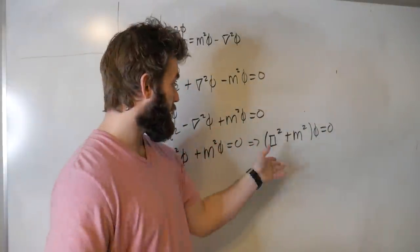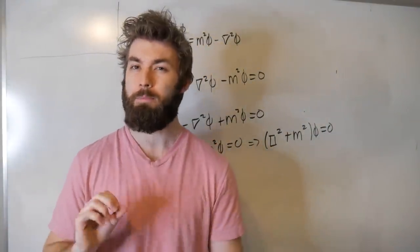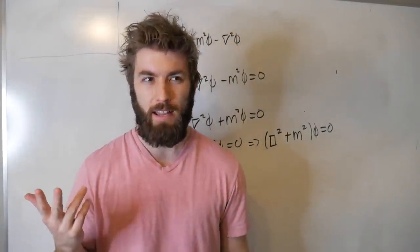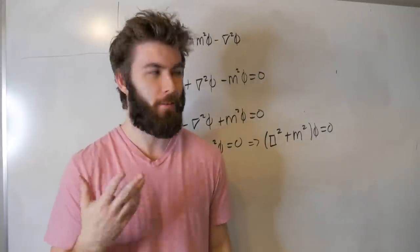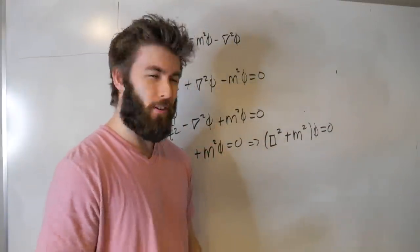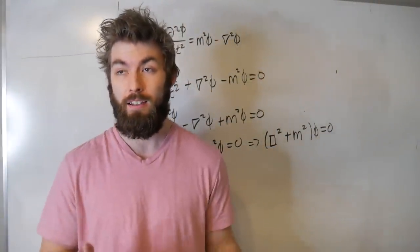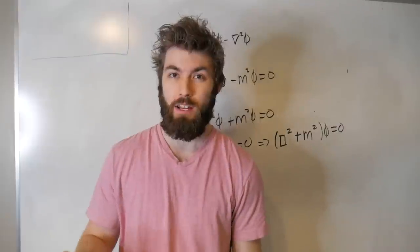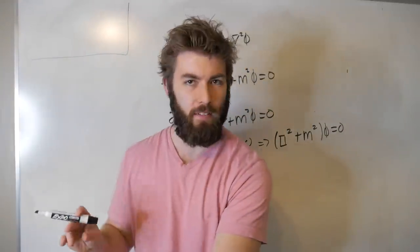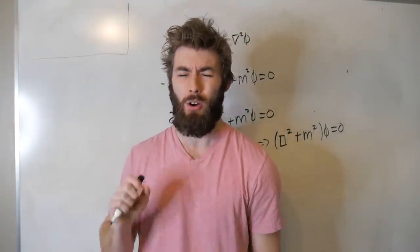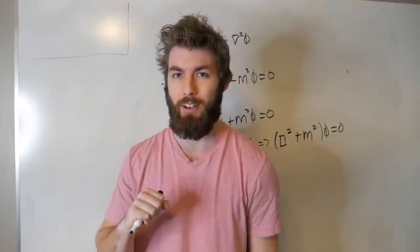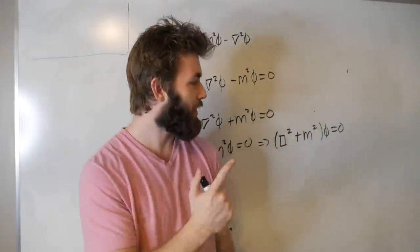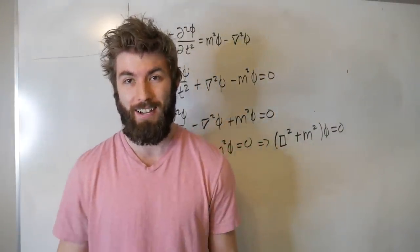But yeah, this is the Klein-Gordon equation. It applies to particles that have spin zero, so off the top of my head, I know the Higgs boson. I can't really think of any others. So it's a little limiting in that sense. But it's a first attempt at a relativistic quantum mechanic, so it's pretty cool. I should have the next video on the tensor calculus series that I've been doing out sometime this week. I'm definitely going to have it out. So stay tuned for that. Let me know in the comment section if you enjoyed this video as well. I'll see you guys there.